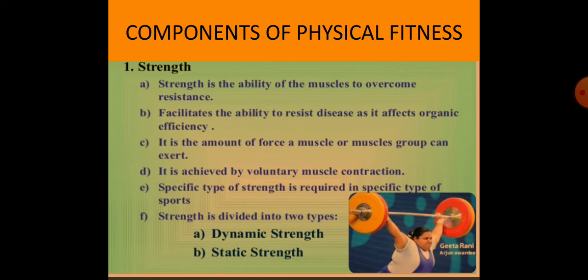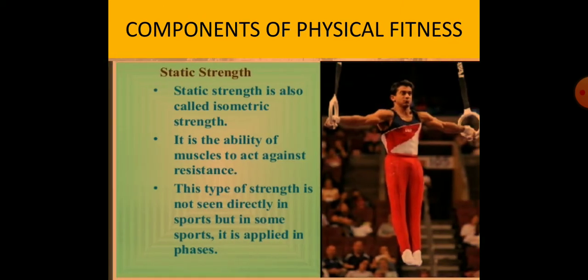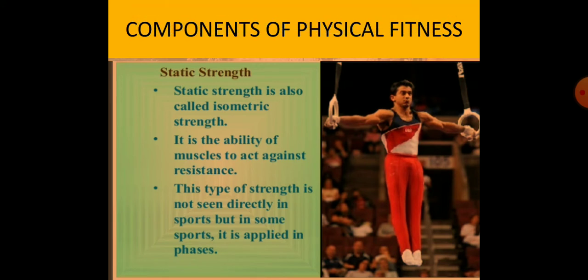Strength is the amount of force a muscle or muscle group can exert, achieved by voluntary muscle contraction. A specific type of strength is required in specific types of sports. Strength is divided into two types: dynamic strength and static strength. Static strength is also called isometric strength, in which muscles exert force in a stable position without any movement, acting against resistance. This type of strength is not directly seen in sports but is applied in phases.